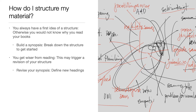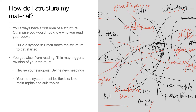You simply add new headings if needed, take old headings out, or shuffle them as you read and gain a better understanding. Therefore your note system must also be flexible. Use main topics and subtopics in your notes, or at least make references to them, so you can always link your notes to your outline. You must be able to rearrange your notes and add new subtopics to your synopsis. Really, it's all about keeping it flexible so that you can always reorganize your material.